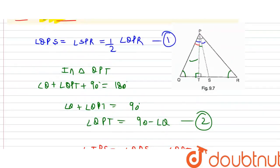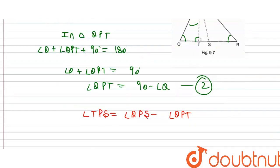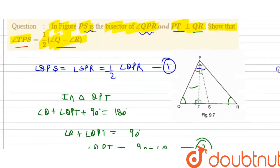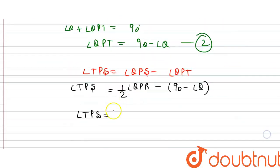QPS is half of angle QPR from equation 1, so I substitute: TPS equals half of angle QPR minus QPT. Since QPT equals 90 minus half of angle Q, angle QPR is angle P, and half of angle QPR means half of angle P.